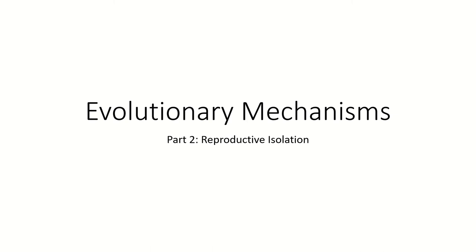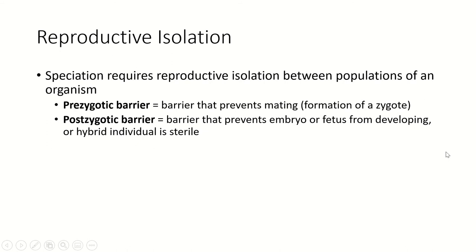Hey, it's Professor Gould. In this section, we're going to talk about different forms of reproductive isolation. Reproductive isolation is some kind of mechanism that separates a population into two species so they cannot mate with each other and produce fertile offspring. We categorize these depending on when the mechanism works.